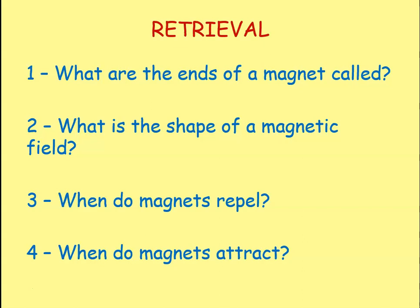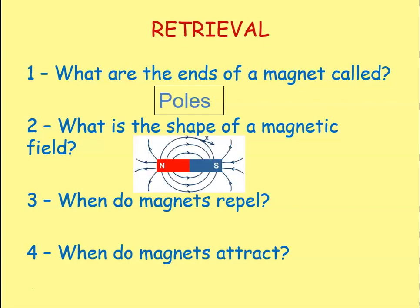Let's go through the answers. Question one: what are the ends of a magnet called? They're called the poles — we have the north pole and the south pole. Question two: what's the shape of a magnetic field? You needed to sketch this — draw a magnet with north and south, with field lines emerging from the north going back into the south, with arrows showing direction from north to south.